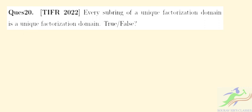Hello students, welcome to short-ups, our classes. In this particular lecture we will be solving the paper of TIJ for 2022. Question 20 is asking: every subring of a unique factorization domain (UFD) is a unique factorization domain — whether this is a true or false statement. So first of all, we can take any integral domain.